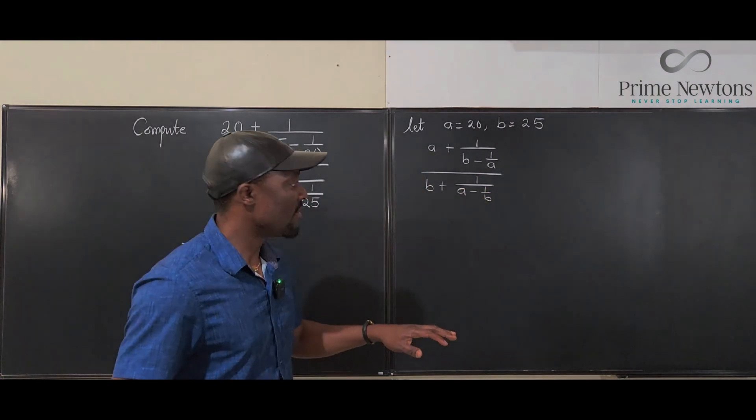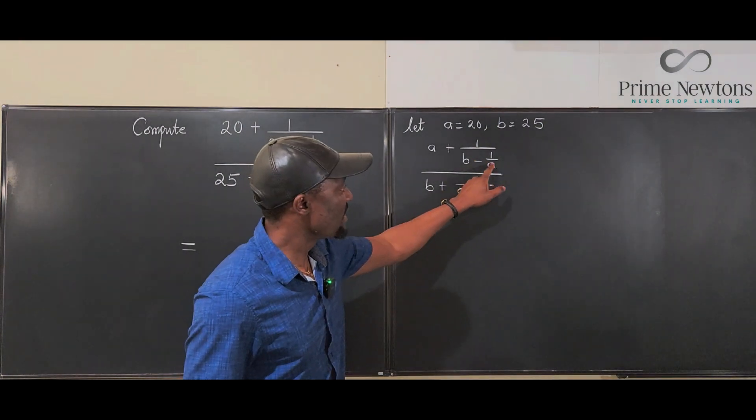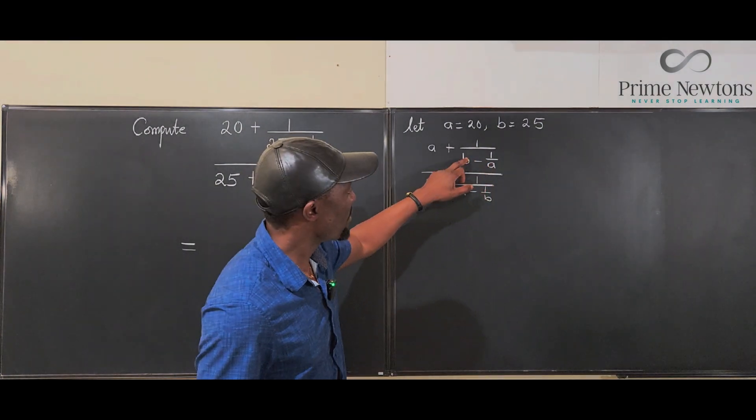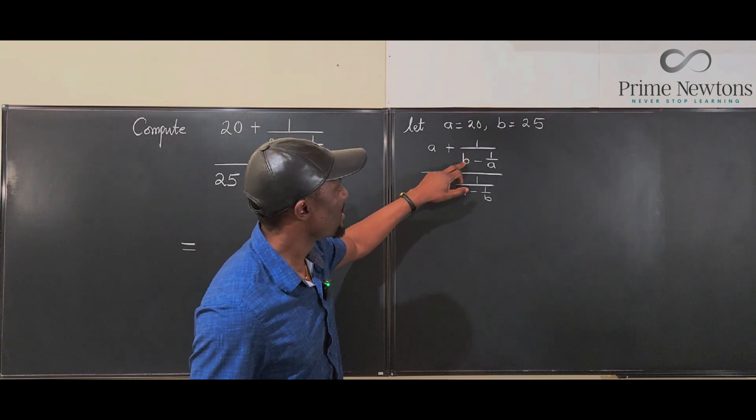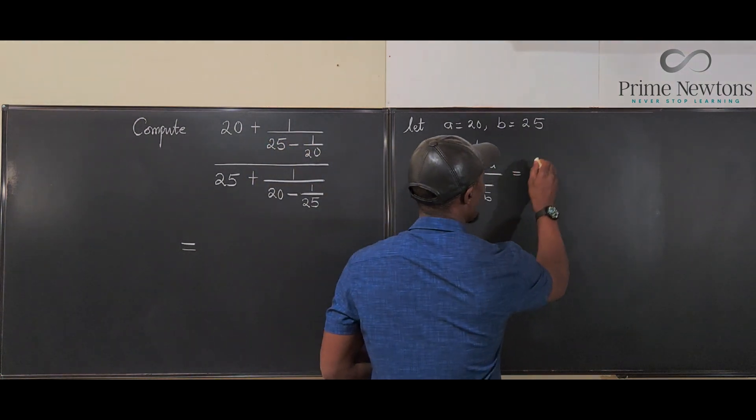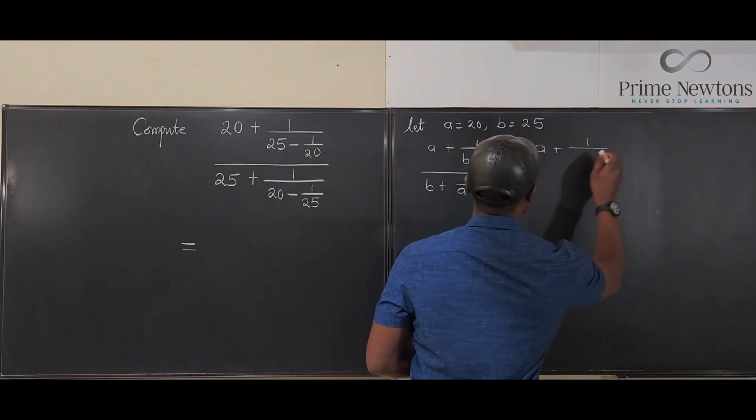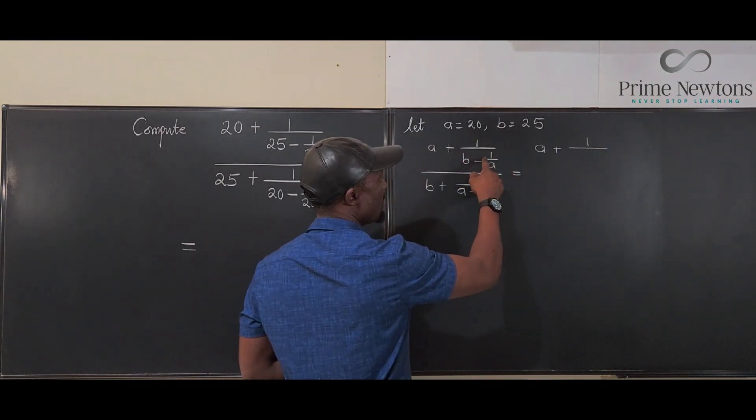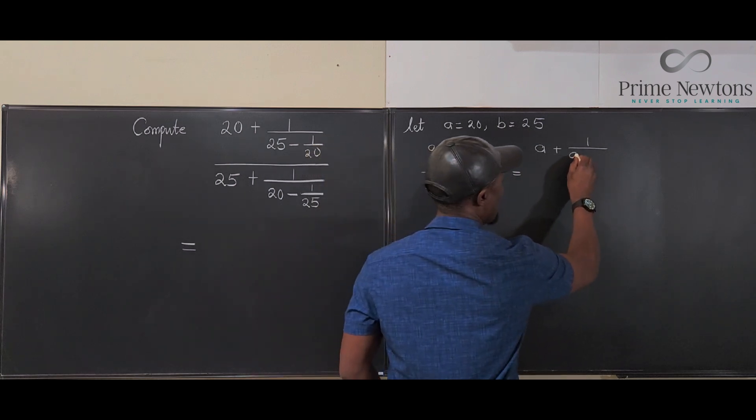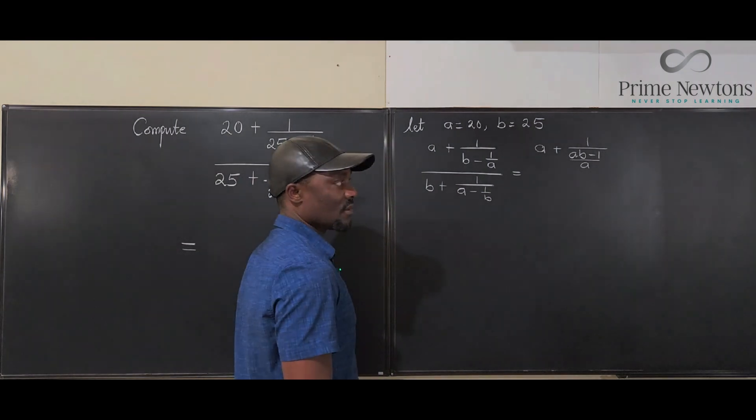Now one thing we know is that you can resolve these fractions quickly. If you give these a common denominator, this is going to be AB minus 1 over A. So this is going to be A plus 1 over, if you resolve this, you're going to get AB minus 1 over A.